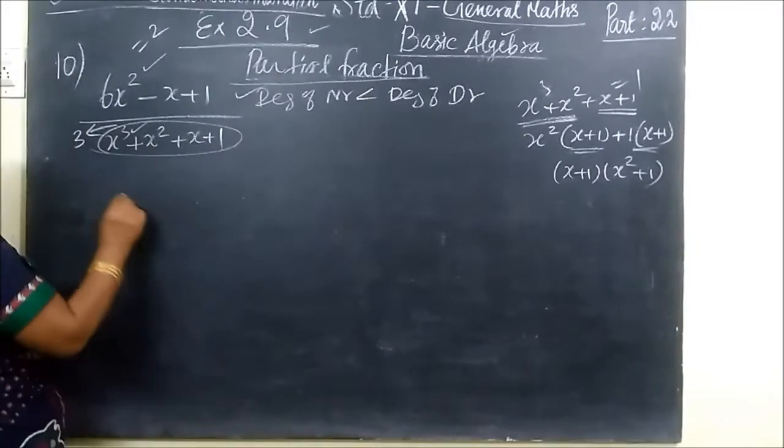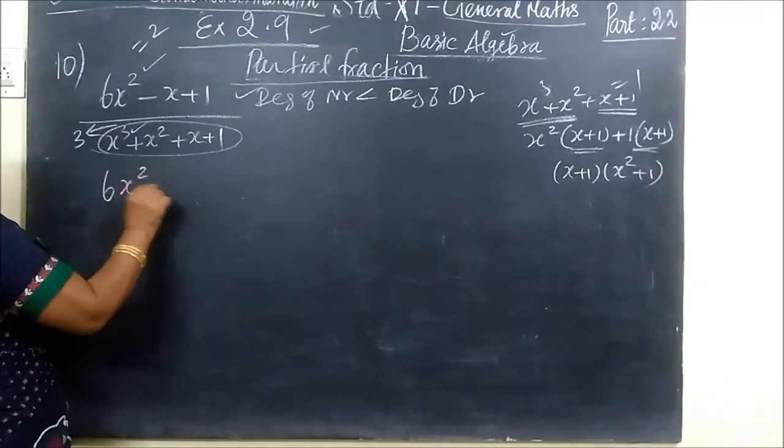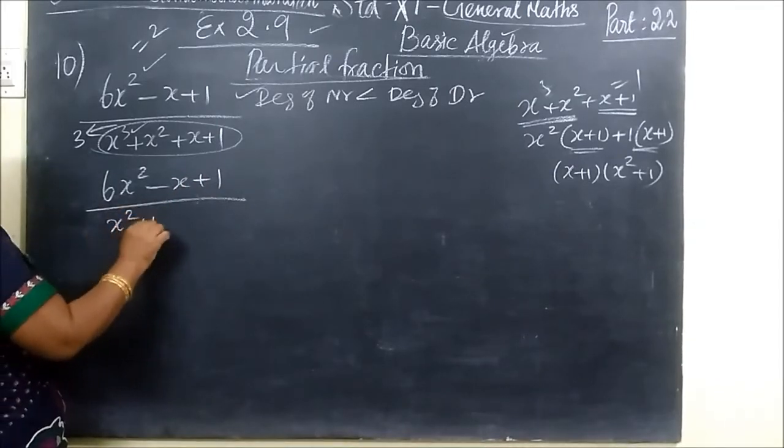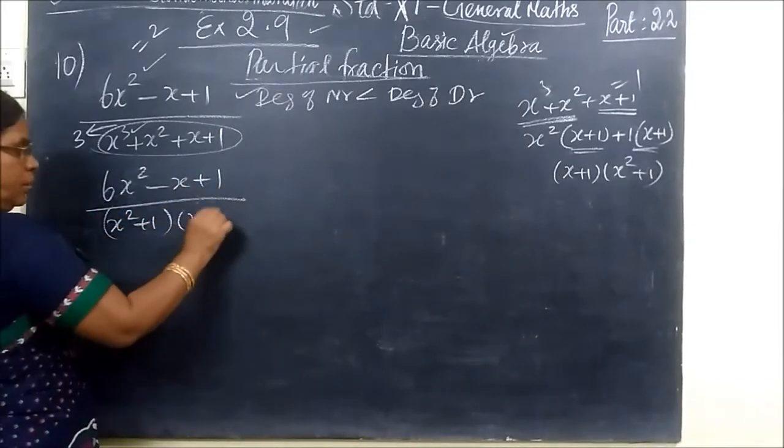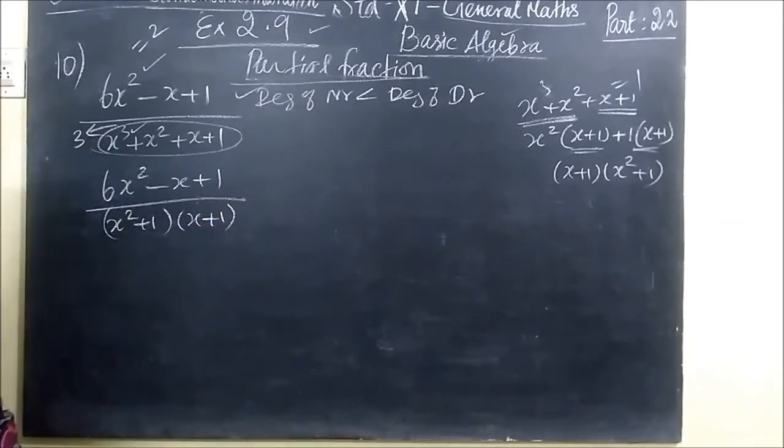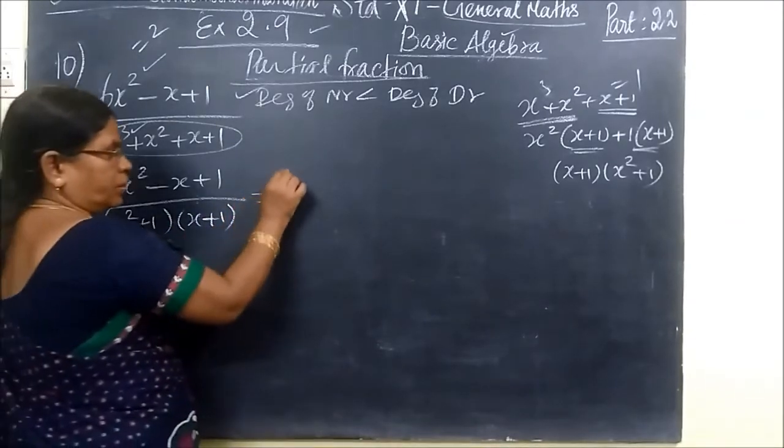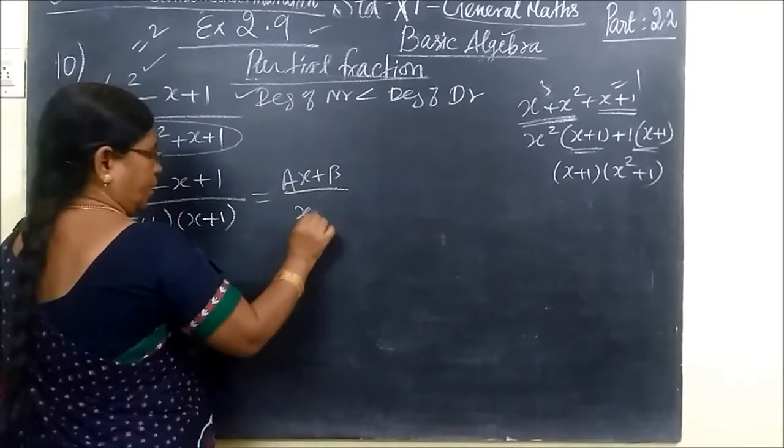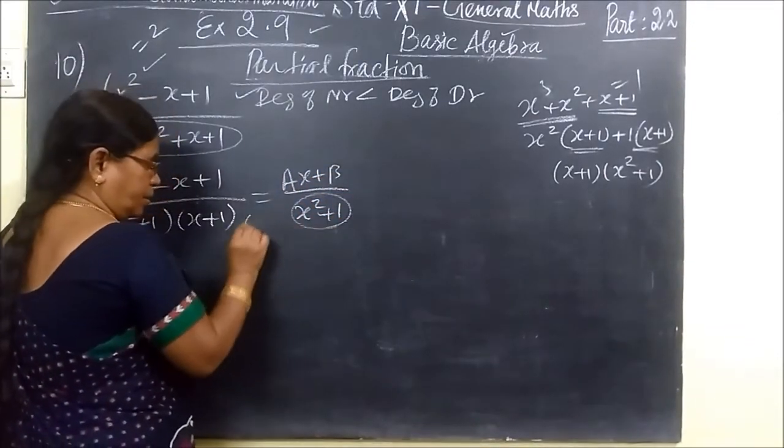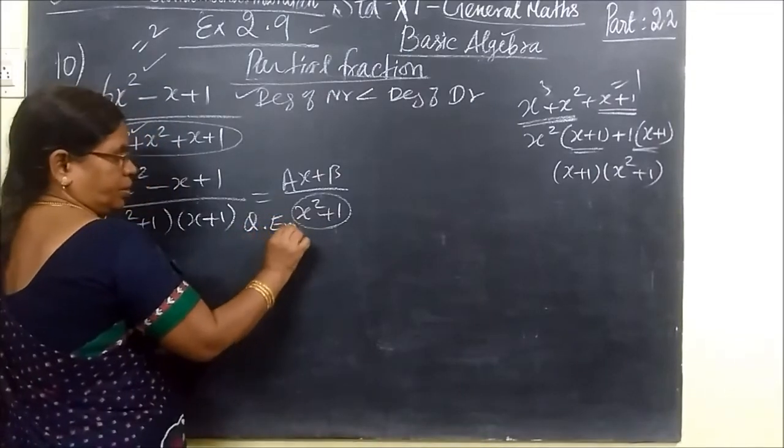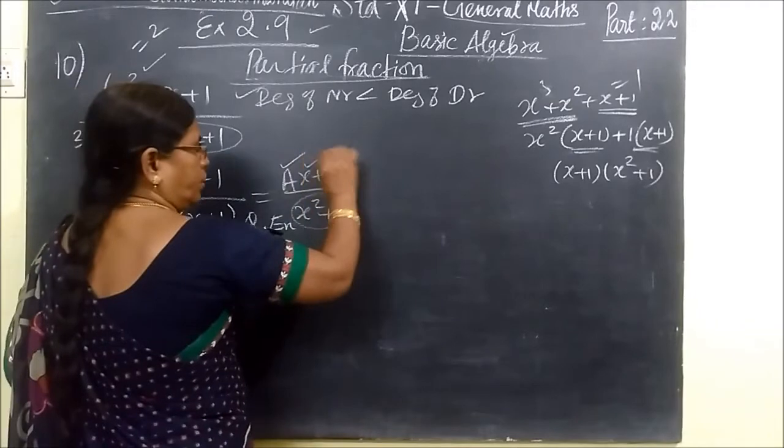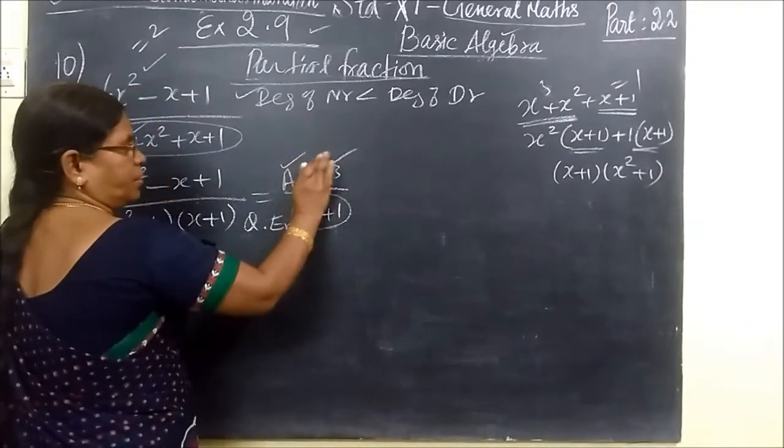So we are changing the sum as 6x² minus 6x plus 1 by x² plus 1, then x plus 1. If you are using type 2, Ax plus B by x² plus 1. Since it is a quadratic equation, we are writing double constant, Ax plus B.